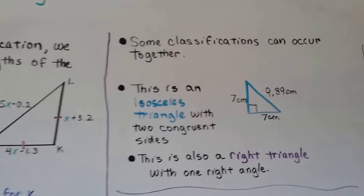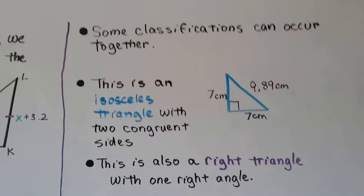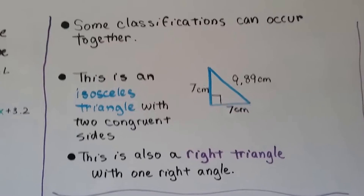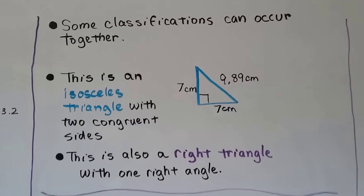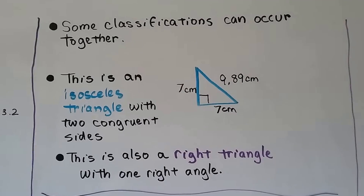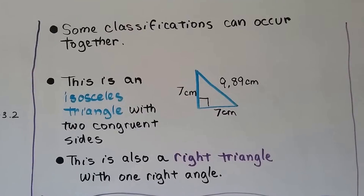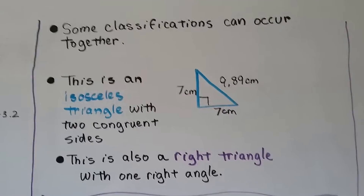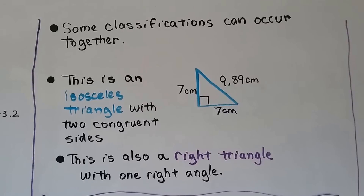Some classifications can occur together. This is an isosceles triangle with two congruent 7-centimeter sides, and it's also a right triangle with one right angle — so it's both isosceles and right.